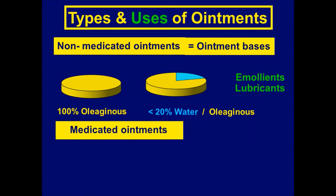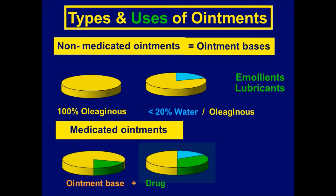Due to the high oleaginous percentage in non-medicated ointments, they may be used as emollients and lubricants. Lubricants are substances used to decrease friction. So due to the high percentage of oleaginous substance in ointment bases, they may be used to decrease friction. Medicated ointments are ointment bases with a drug added — either oleaginous ointment bases with drugs, or ointment bases with some water and a drug.